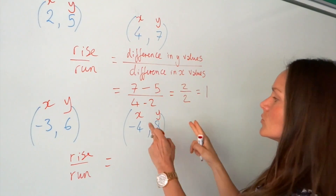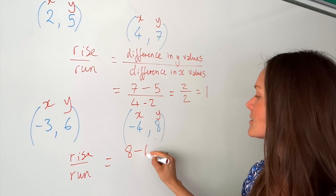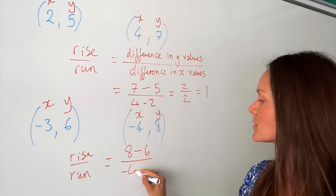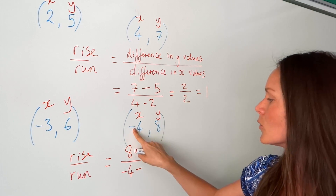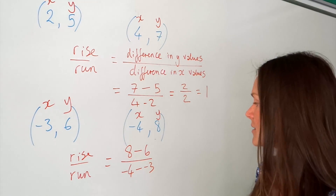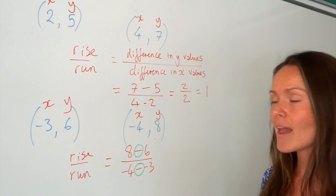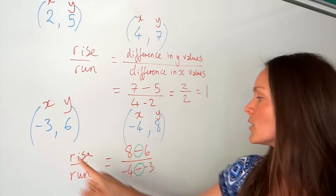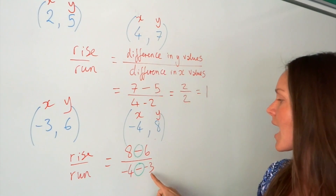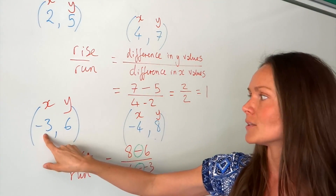I'm going to do the same thing on this one — subtract these two points from those two. I've got eight minus six for the y values on top, the numerator. And underneath, we've got minus four take away negative three. This is where lots of people make a mistake — there's a double minus here. You always subtract, and then that x value also happens to be negative, so there are two negative signs.